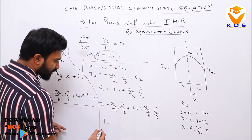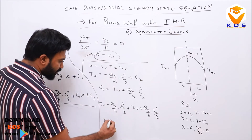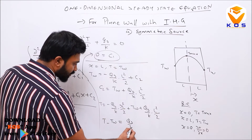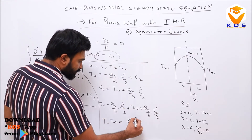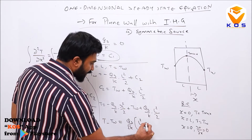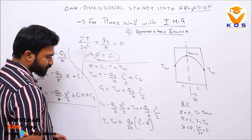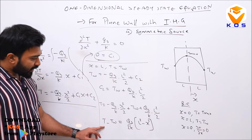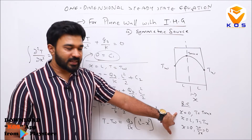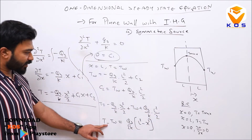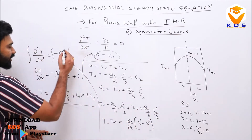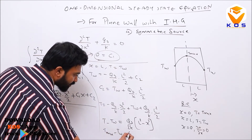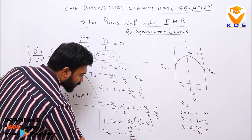Rearranging: T − T_w = qg/(2k) · (L² − x²). At x = 0 this gives the maximum temperature: T_max − T_w = qg/(2k) · L².